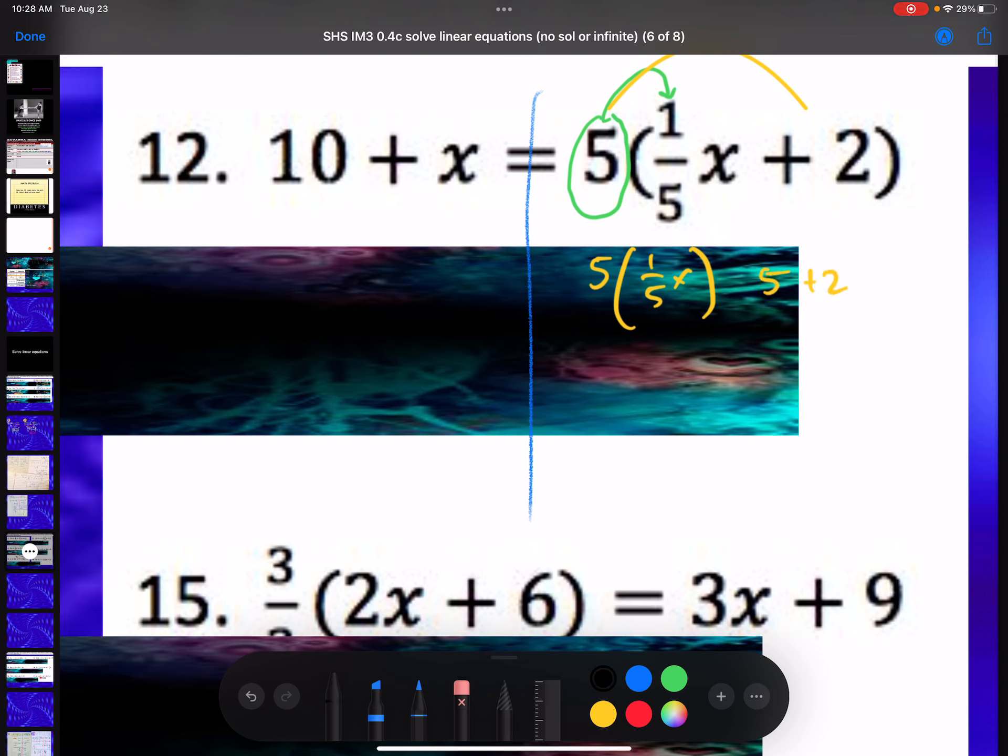So this is going to give you, on this side, 5 over 5x plus 10. And if you simplify that, you're going to get x plus 10.